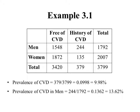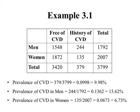We might also be interested in the prevalence by gender. The prevalence in men is 244 divided by 1,792, which gives us 13.62% — so 13% of men had a history of cardiovascular disease. Likewise, the prevalence in women is 135 divided by 2,007, giving about 6.73%. We can think of prevalence as meaning percentage, or as a proportion — which is simply the decimal equivalent of a percentage.